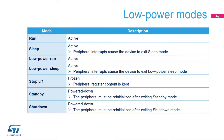General purpose timers (GPT) are active in run, low power run, sleep, and low power sleep modes. In sleep and low power sleep modes, GPT interrupts cause the device to exit these modes. In stop 0 and 1 modes, general purpose timers are frozen, with peripheral register content kept — no reconfiguration needed when exiting. In standby and shutdown modes, general purpose timers are powered down and must be reinitialized upon exit. For low-power use cases, the LP timer offers extended features such as full operation and wake-up capabilities in stop 0 and 1 modes.